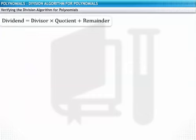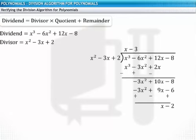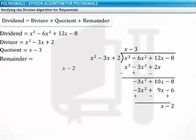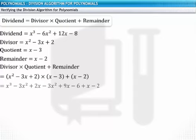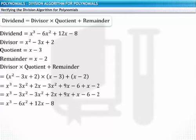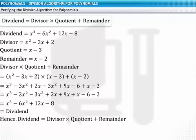Let's now verify the division algorithm for the polynomial division just performed. Here, we divided x cube minus 6x square plus 12x minus 8 by x square minus 3x plus 2. On performing the division, the quotient is x minus 3 and the remainder is x minus 2. Now we substitute the values of the divisor, the quotient, and the remainder in the algorithm. We get x cube minus 6x square plus 12x minus 8, which is the dividend we started with. Hence, we have verified that the division algorithm holds true for polynomial divisions.